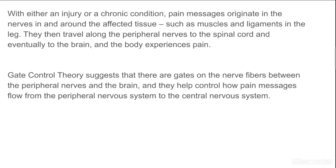With either an injury or a chronic condition, pain messages originate in the nerves in and around the affected tissue, such as muscles and ligaments in the leg. When a pain sensation is perceived by the neurons — suppose in the legs and ligaments, the person gets hit by some nail or sharp object — the impulses carried by the afferent nerve fibers travel along the peripheral nerves to the spinal cord and eventually to the brain, and hence the body experiences pain.